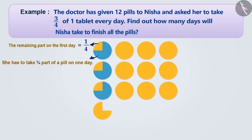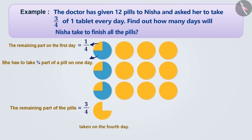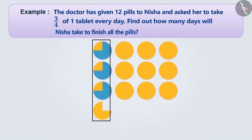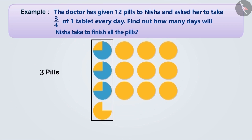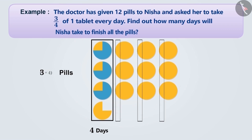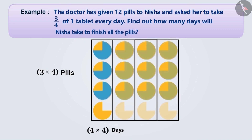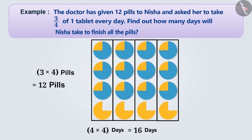If we add the remaining parts, we will get three-fourths of the pill, which Nisha can take on the fourth day. In this way, Nisha will be able to take three pills in four days. Thus, we can say that Nisha will be able to take three into four pills in four into four days, that is twelve pills in sixteen days. So the answer to the given question is sixteen days.